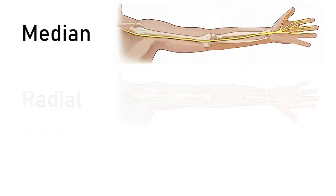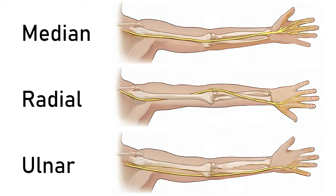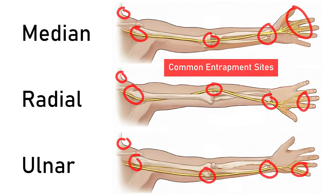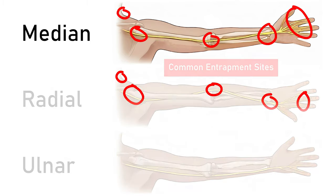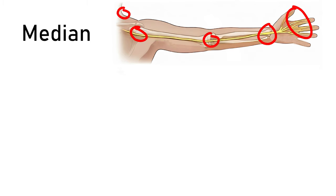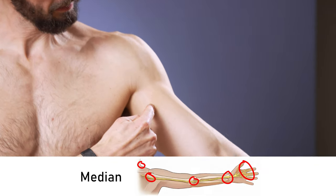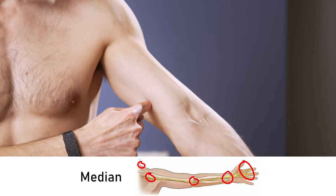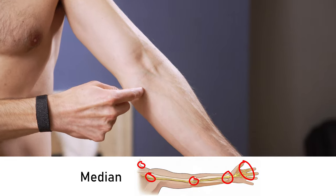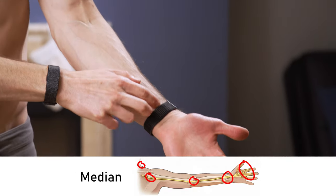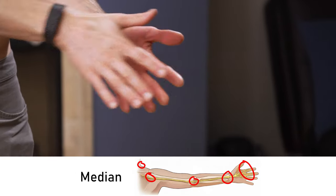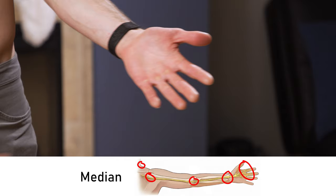The three nerves to be aware of here are the median, radial, and ulnar nerves. These are the three main nerve branches that can become entrapped and cause issues for climbers and the general population. The median nerve, as it forms through the brachial plexus, is going to go more towards the inside of your arm, to the inner aspect of your elbow, and then down the front of your forearms and into the fingers, more so on the palmar side.